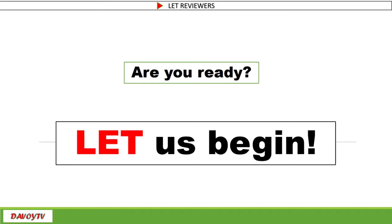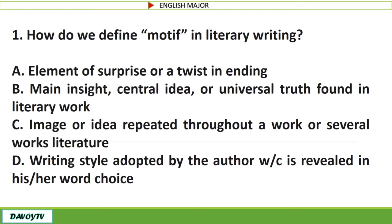Question number 1. How do we define motif in literary writing? A. Element of surprise or a twist in ending. B. Main insight, central idea, or universal truth found in a literary work. C. Image or idea repeated throughout a work or several works of literature. D. Writing style adopted by the author, which is revealed in his or her word choice. The correct answer is letter C: image or idea repeated throughout a work or several works of literature.